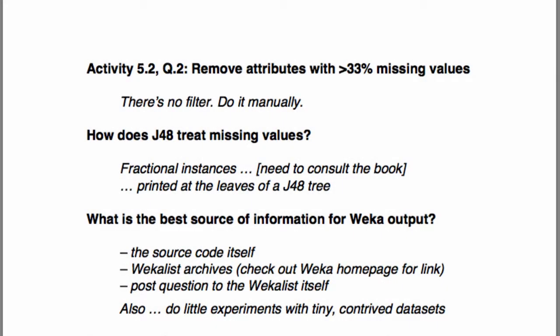A couple of things came up on Class 5. Someone talked about in Activity 5.2, Question 2 — you had to remove attributes with more than 33% of missing values. The way to do this is manually in the pre-process panel. Just go through the attributes and click them if you want to remove them after looking at the missing value percentage. There's no way of doing this automatically. In real life, you wouldn't remove those instances — you would choose a data mining method that can deal with missing values properly. You don't want to throw away information unnecessarily.